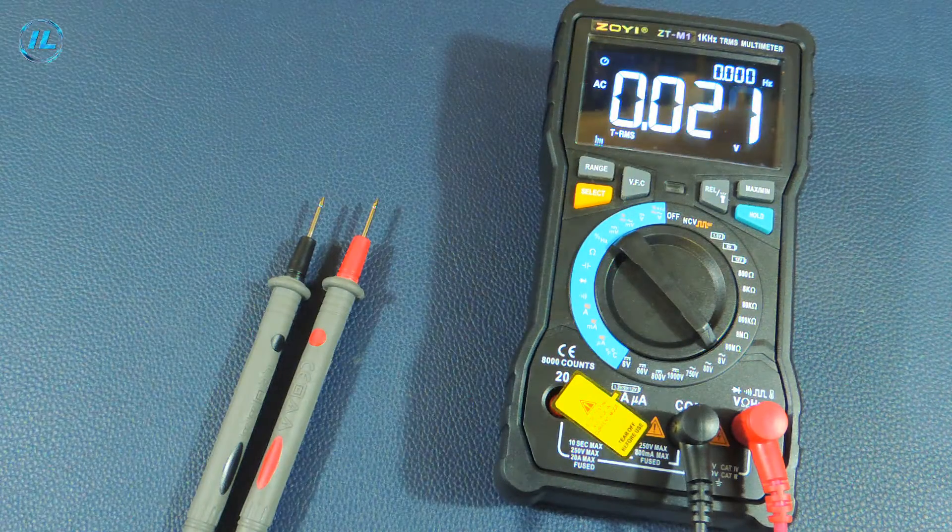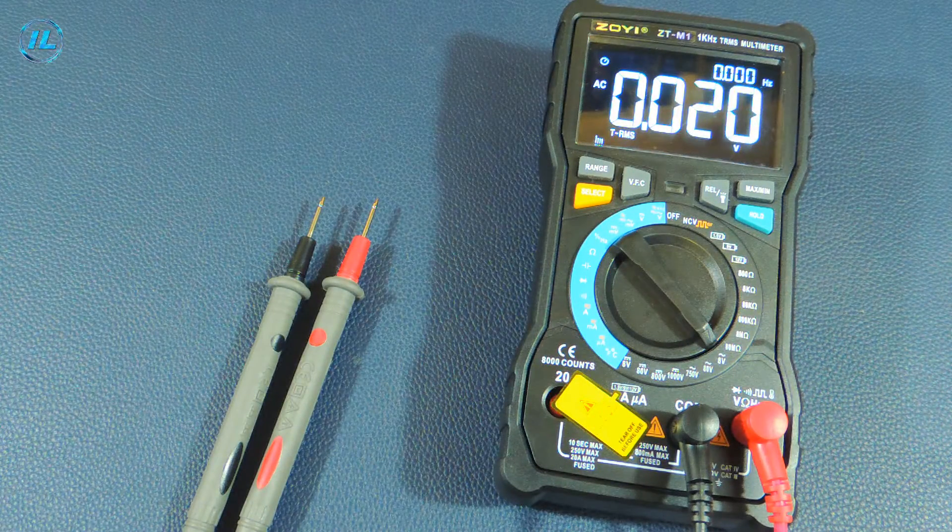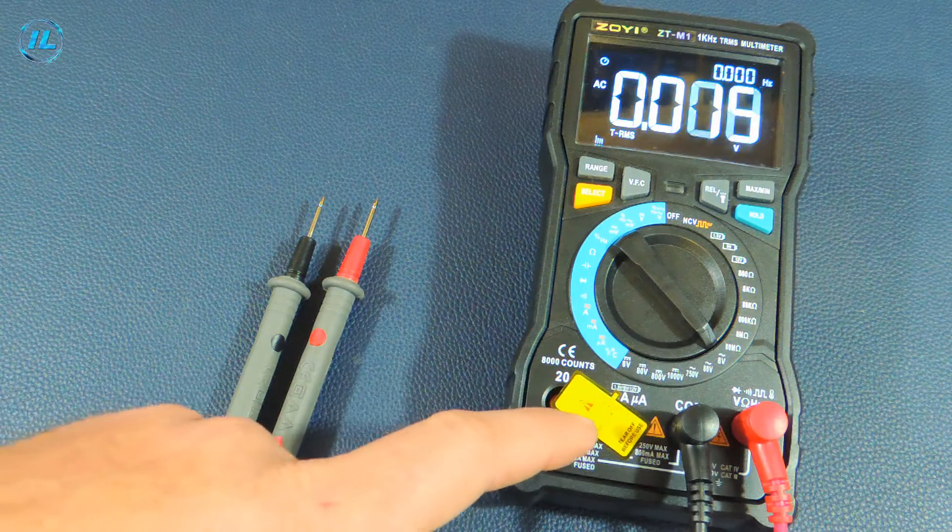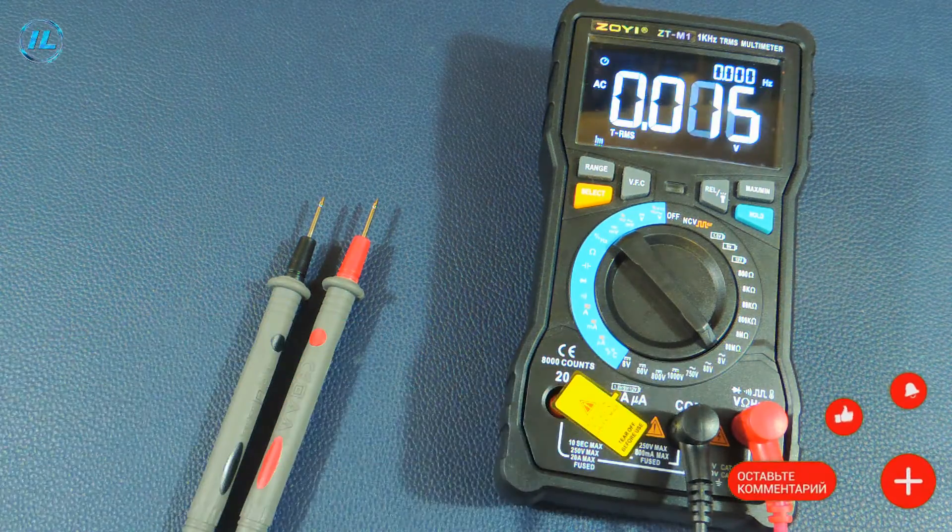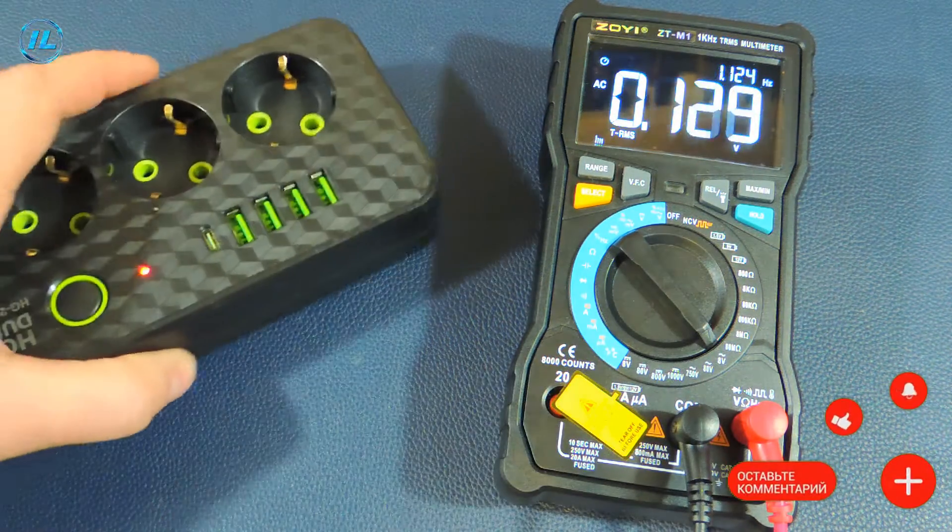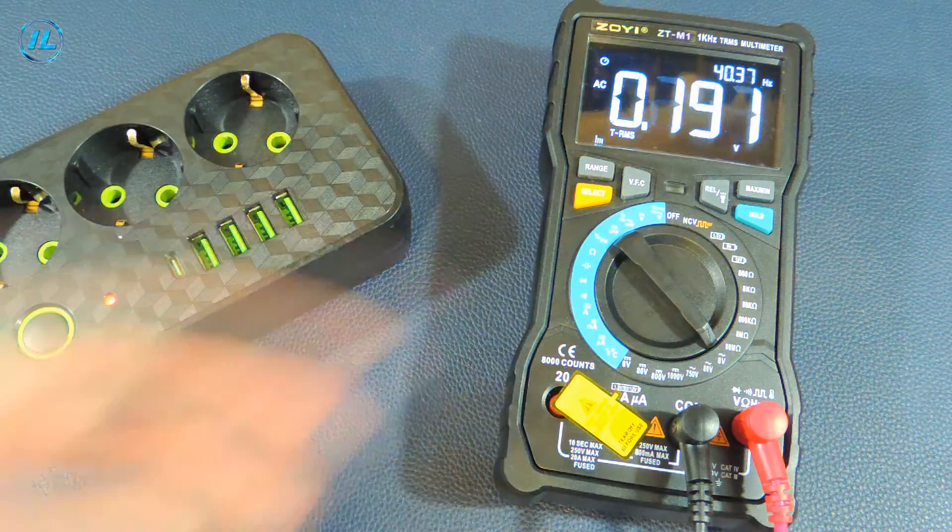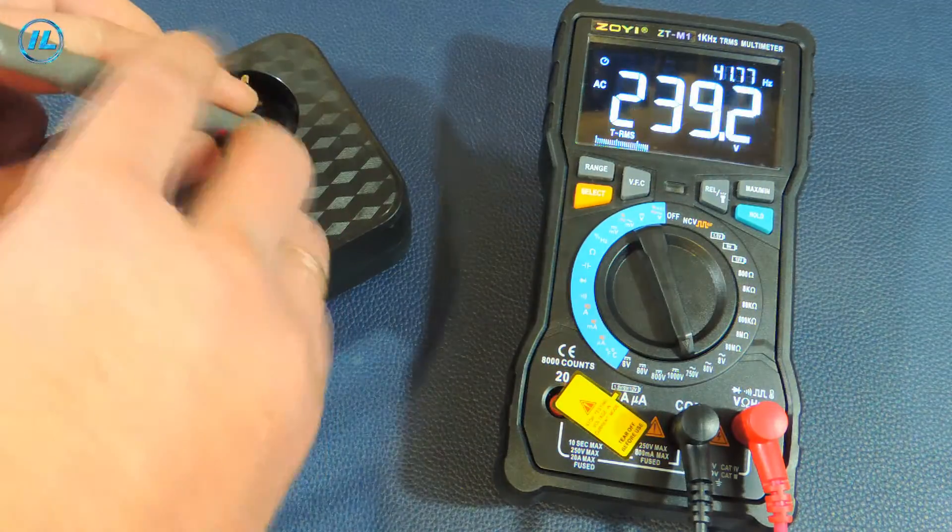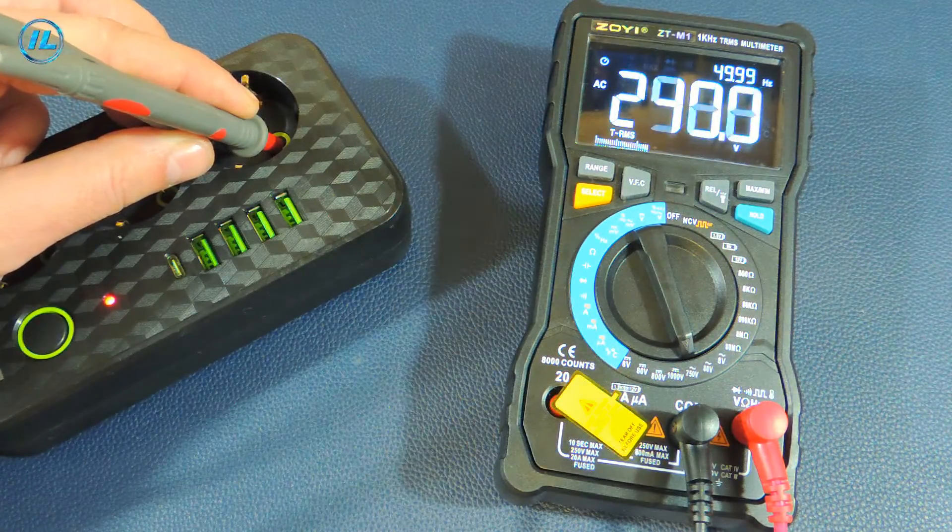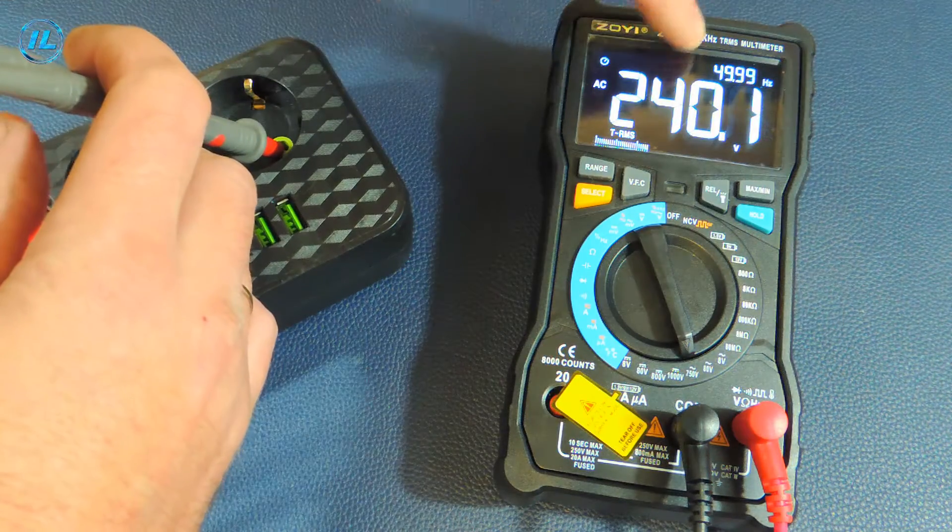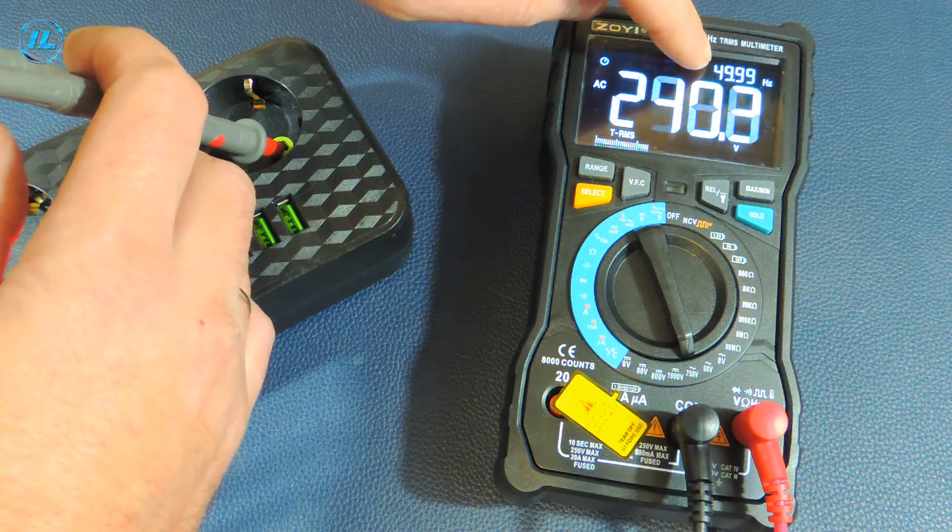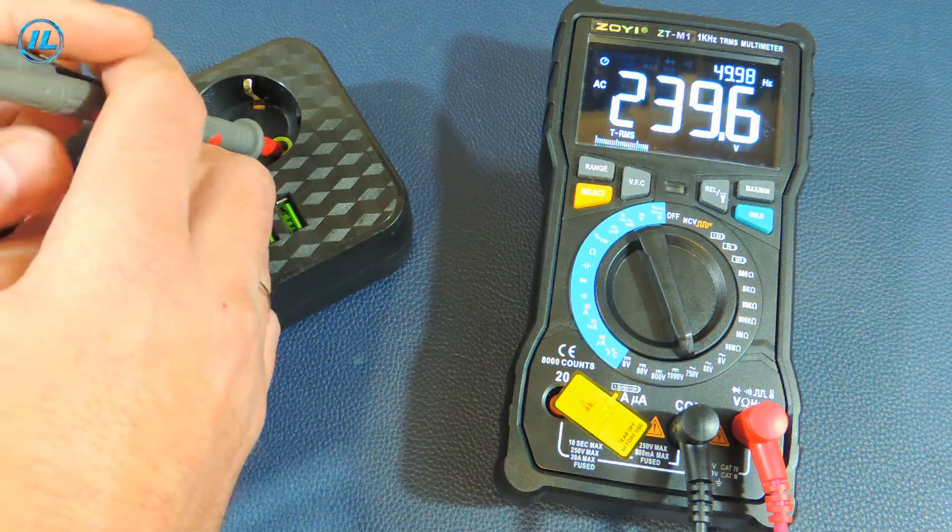The next few points are the measurement of alternating voltage. The first item is 8 volts and the last one is 750 volts. I measure the voltage in the household electrical network: 239 volts. By the way, here at the top of the screen, the frequency is immediately displayed, which is 50 hertz.